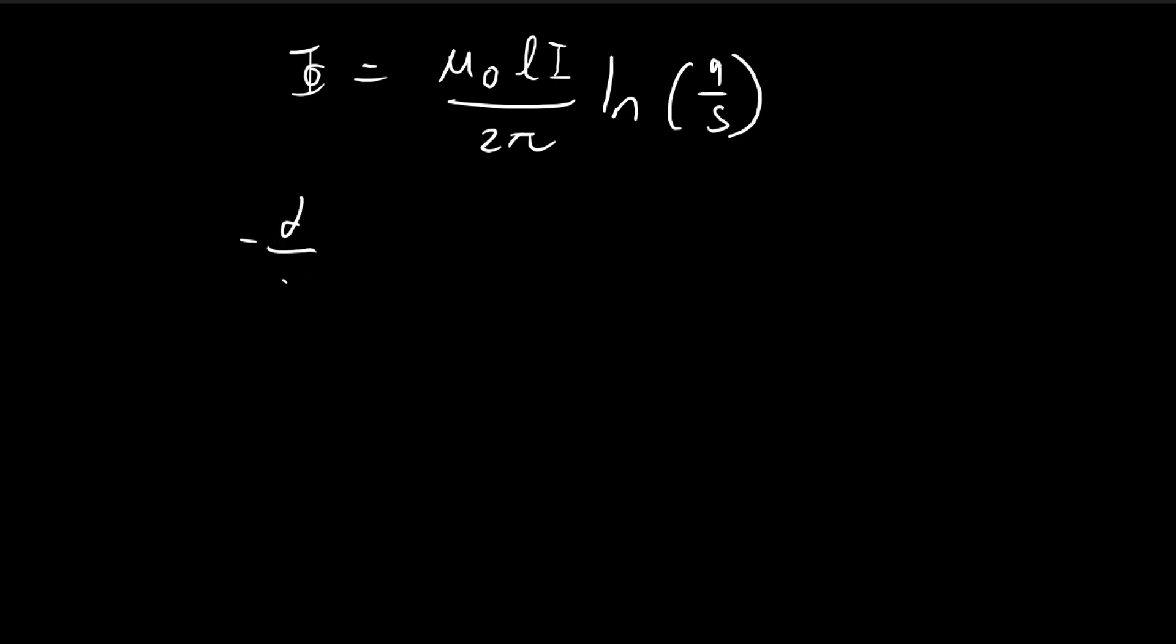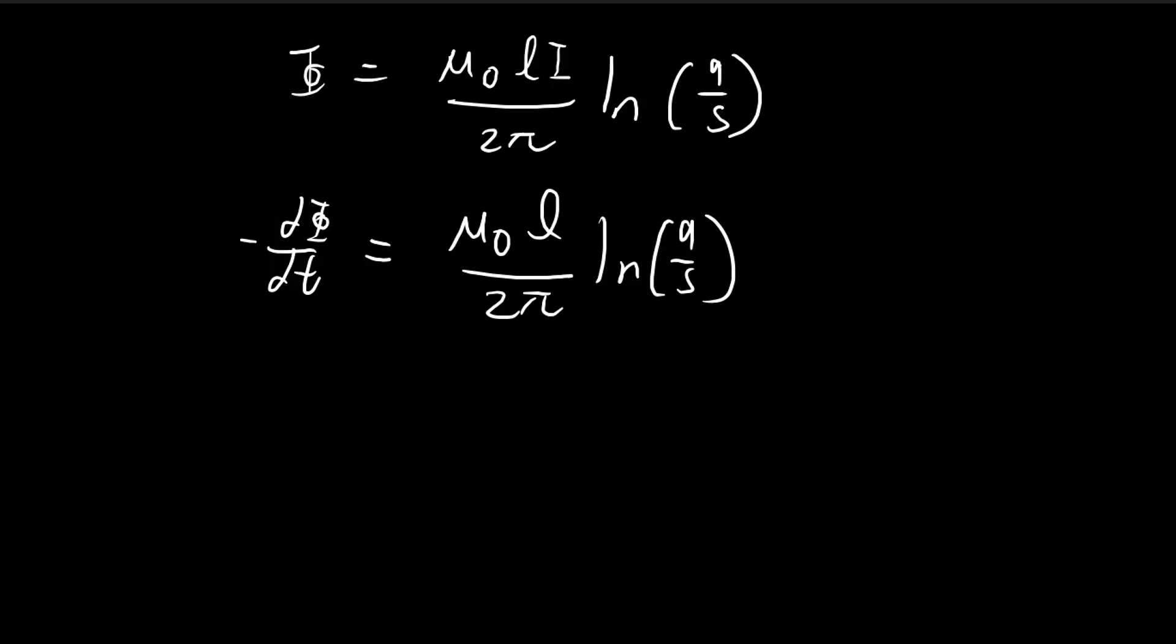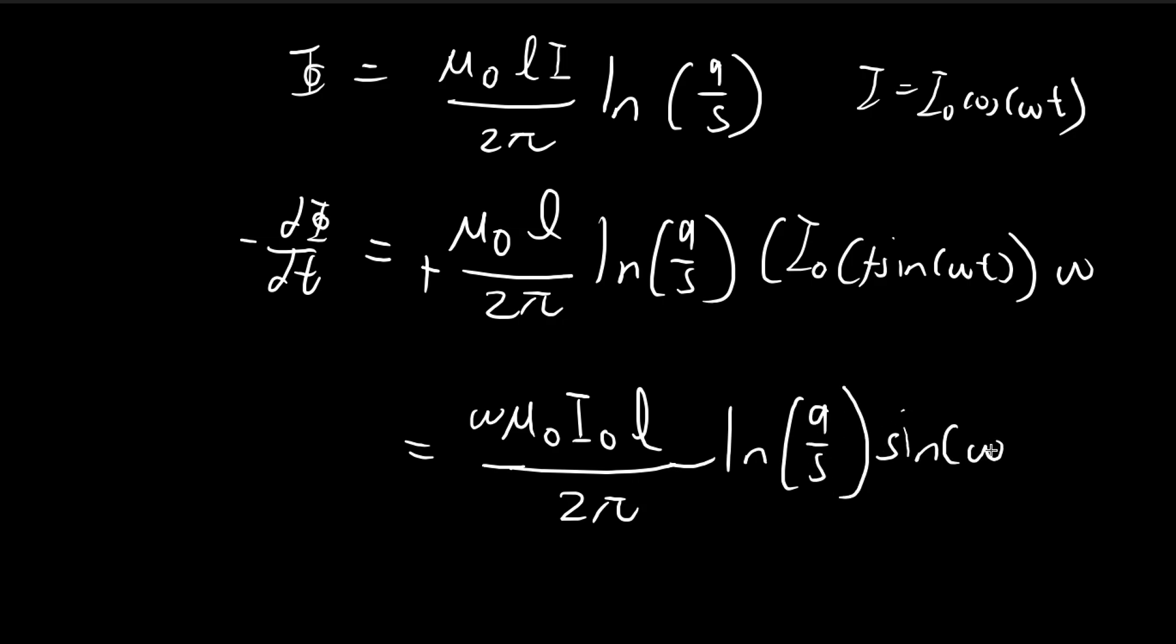And now we're interested in the change in the flux. So the only thing that's varying according to time is the current I. I is equal to I naught cosine omega t. So taking the derivative, there's a negative sign, so cosine becomes negative sine omega t times omega. So the signs, these cancel out. So in the end, we get mu I naught L over 2 pi times omega natural log A over S sine omega t.